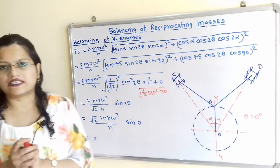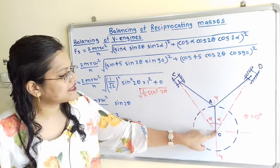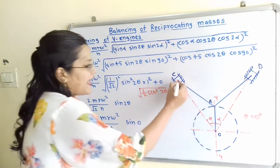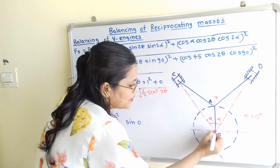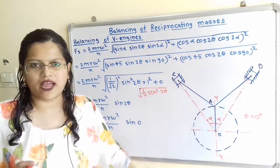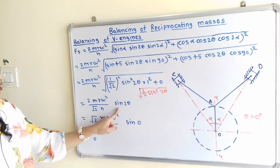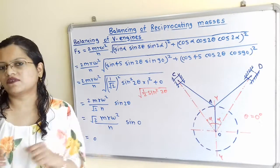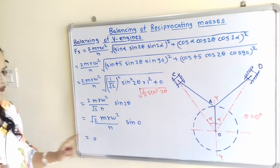The question states that the crank bisects the center lines of the cylinders, meaning the crank OA lies along the vertical axis Y. In that case, theta = 0. When theta = 0, sin(2θ) = sin(0) = 0, so the entire secondary force term becomes zero. Therefore, there is no secondary unbalanced force: FS = 0.